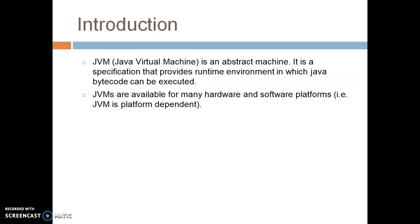We are trying to create an abstract machine where we are trying to run the bytecode, and bytecode can be executed by JVM. JVMs are available for many hardware and software platforms. As I said in my earlier video, bytecode is platform-independent or machine-independent. But when we are talking about JVM, it is machine-dependent or platform-dependent. So JVMs are available for many hardware and software platforms.